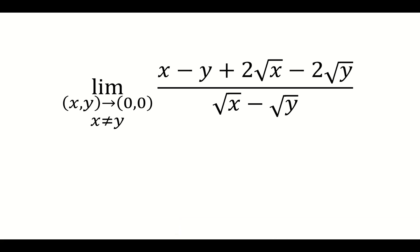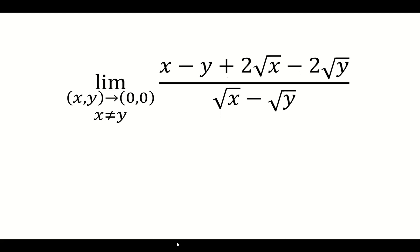I want to find the limit as x and y approach 0,0 of x minus y plus 2 root x minus 2 root y over the square root of x minus square root of y.